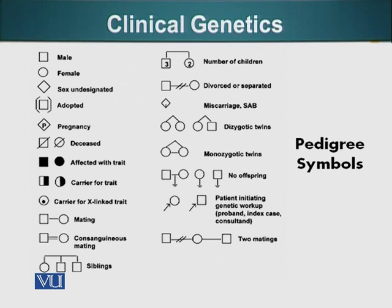There are other displays too. Affected with the trait is a solidly filled square or circle. Carrier of the trait — the heterozygous condition — is a half-colored circle or half-colored box. Carrier for an X-linked trait is a circle with a dot in it. We cannot have carriers shown with boxes because only females can be carriers of X-linked traits.